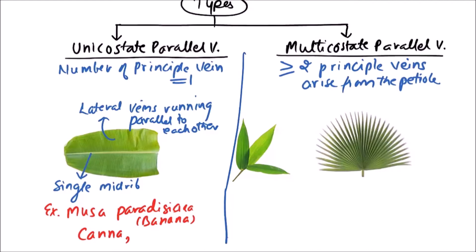The second group that is multicostate parallel venation, two or more principal veins are there that run parallelly, but these can also be again classified into two categories. First one is convergent and the another one is divergent. This is convergent type and this one is divergent type.